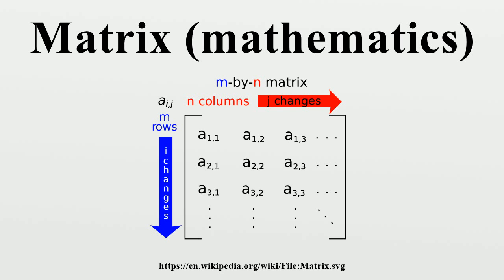The individual items in a matrix are called its elements or entries. Two matrices can be added or subtracted element by element. The rule for matrix multiplication, however, is that two matrices can be multiplied only when the number of columns in the first equals the number of rows in the second.